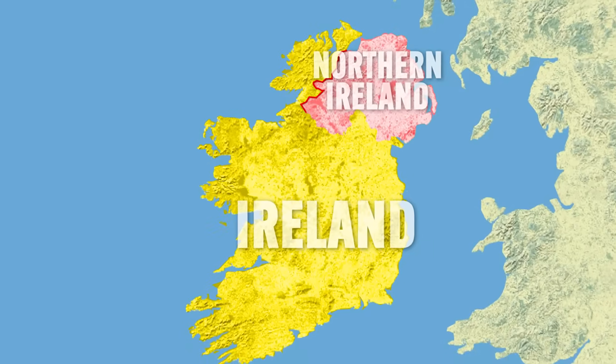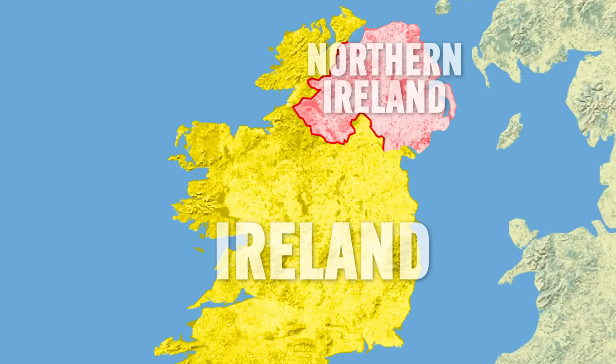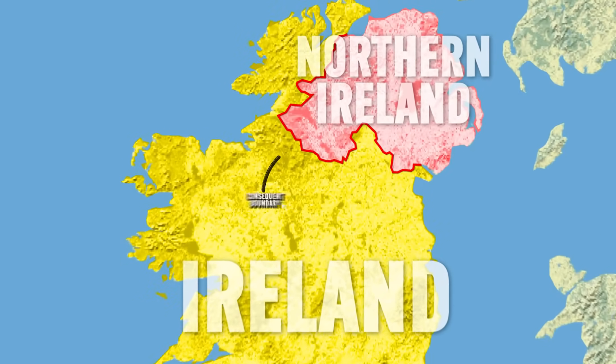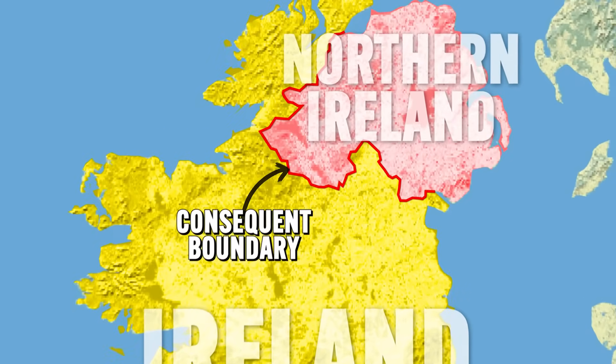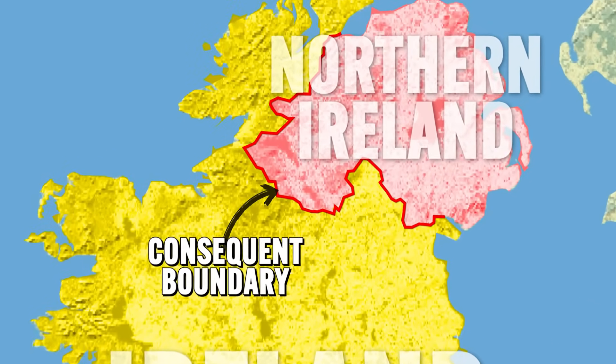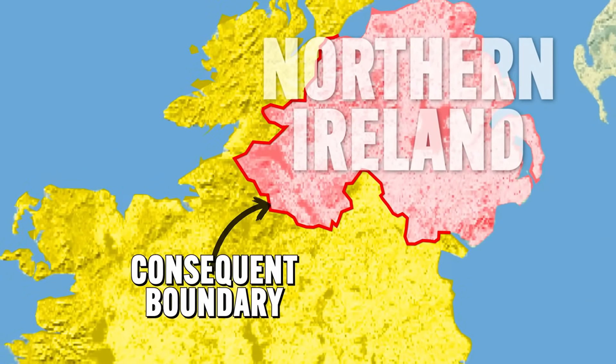The boundary we just talked about between Ireland and Northern Ireland would also be considered a consequent boundary because it was drawn between two distinct cultural landscapes. In that case, religion played a big role — with Catholic Christians here and Protestant Christians here.